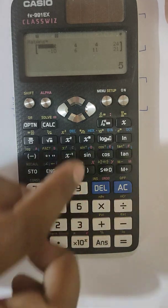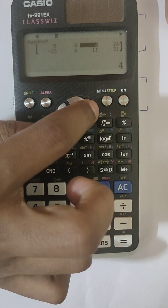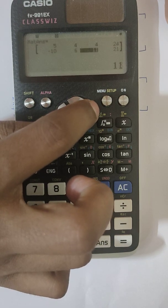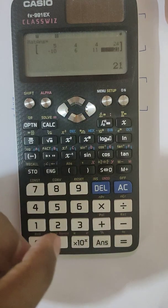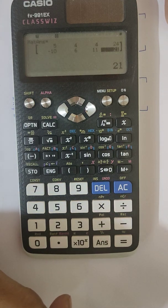So as you can see, now you got the multiplication of two matrices. So you can see the first element is 5, second is 4, next again is 4, then 24, then minus 10, then 6, then 11, and 21. So this is the way you can perform multiplication of two matrices here in the scientific calculator.